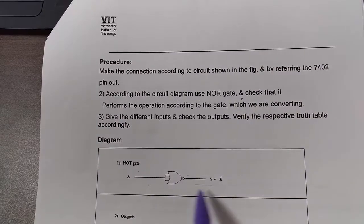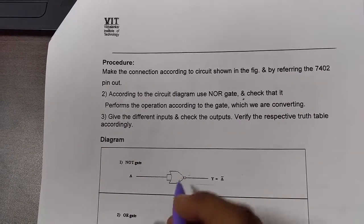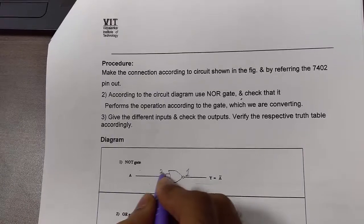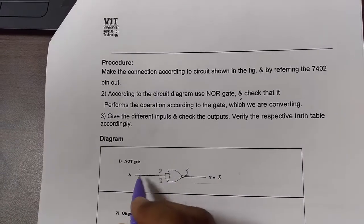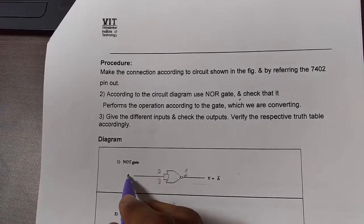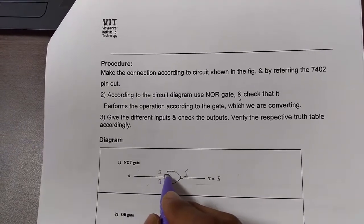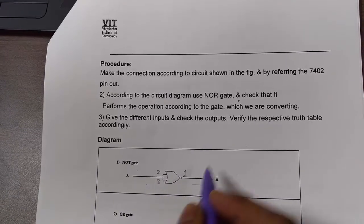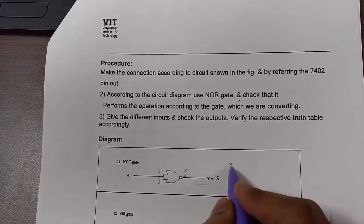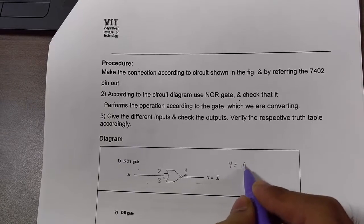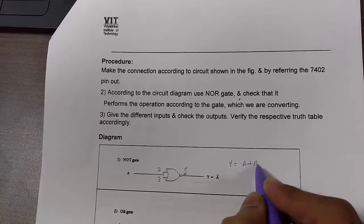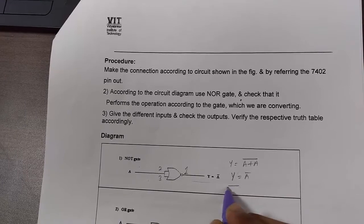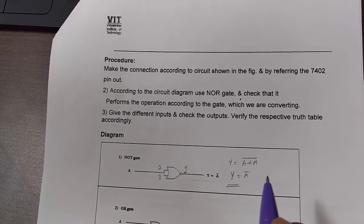This is how we get a NOT gate using the NOR gate IC. Pin number 1 is output, and pin numbers 2 and 3 are inputs. Since the NOT gate requires only one input, that same input is given to both pin 2 and pin 3, and the output is taken from pin 1. So we get y equal to A plus A bar, and hence we get y equal to A bar as output. This is how we get the NOT gate.